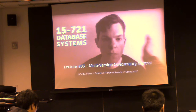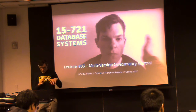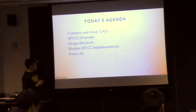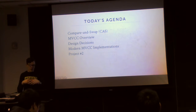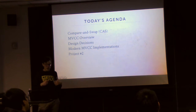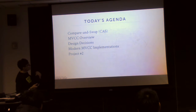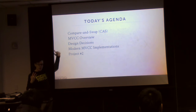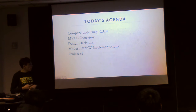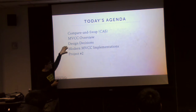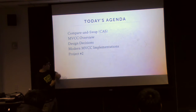For today's class, this is sort of the last lecture we're going to have on concurrency control. There's a lot of stuff I want to cover, and then at the end we'll finish off with discussing Project 2. I'll start off with an overview of the compare-and-swap atomic operation, because this is going to be useful for understanding how we're doing MVCC, and for Project 2 you need to do this in your index. Then we'll do an overview of MVCC and deep dive into the different design decisions. And then if we have time, we'll talk about two modern MVCC implementations in both Hekaton and Hyper.